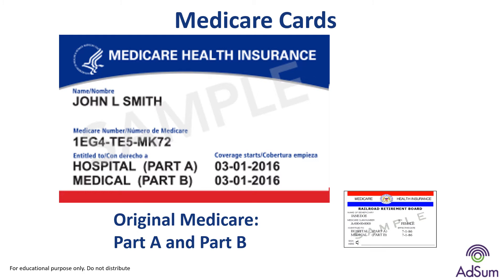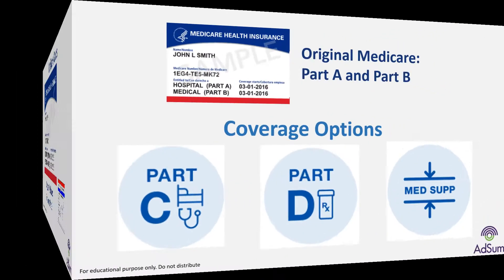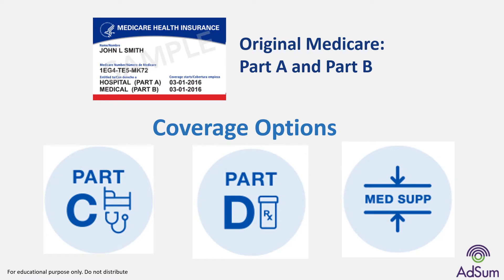When you register for Medicare, you will receive a Medicare card. What you register for is called Original Medicare, which is Part A and Part B. You will be assigned a Medicare number. Original Medicare still requires you to be responsible for some costs. The purpose of this session is to explain what Original Medicare covers, why you need additional coverage, and the options you have. The additional Medicare healthcare plans are Part C or Medicare Advantage plan, Part D prescription drug plan, and Medicare Supplement or Medigap plan.